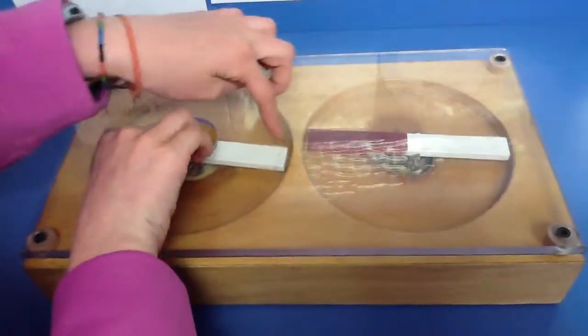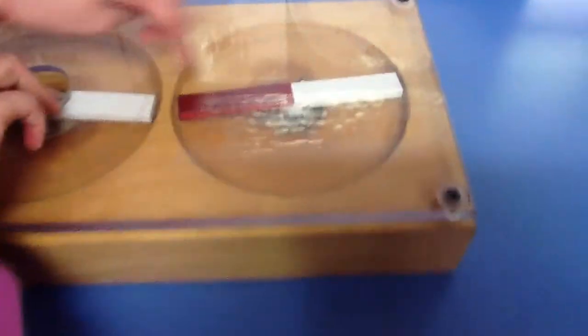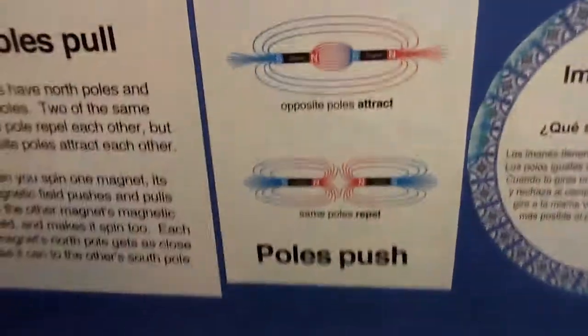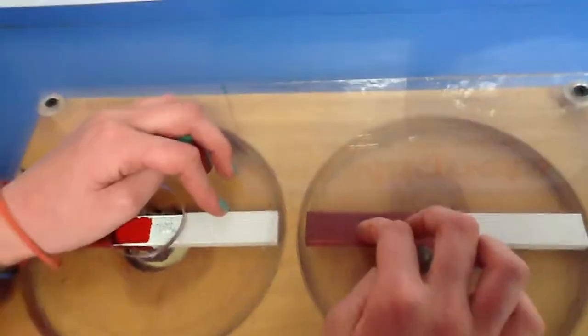But if I turn the southern side, they attract. So opposite poles, which is what each side is called, attract, which means they attach to each other.